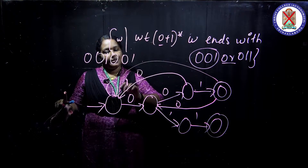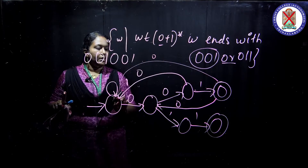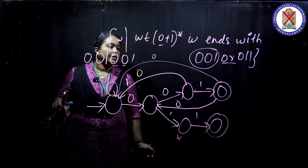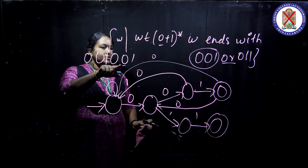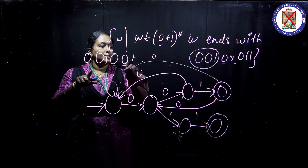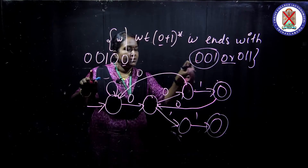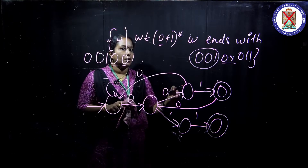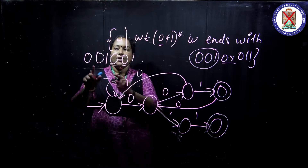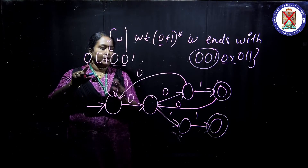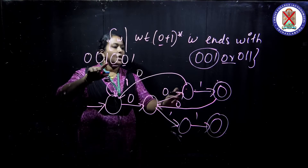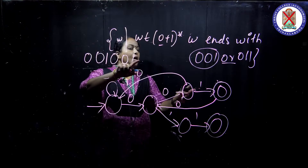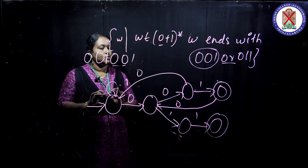So this string is correctly accepted. It ends with 0, 0, 1 — that is why. Check every time: put examples of your own and verify whether your marking is correct. When I trace through: 0 comes, move here; 1 comes, move here; again 0 comes, move here; again 0 comes, move here; again 1 comes — it has been accepted. So that is correct.